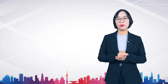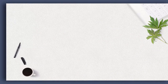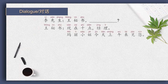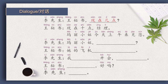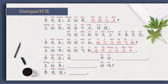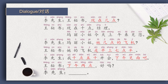Complete the following dialogue using the words and sentence patterns you have learned. 王秘书,现在几点? 现在十点,经理。 玛丽小姐今天上午来见您。 玛丽小姐?她几点的飞机? 她的飞机是早上七点半。 我十点五十开会,下午见面吧。 下午两点,好吗? 好的。 Good job!